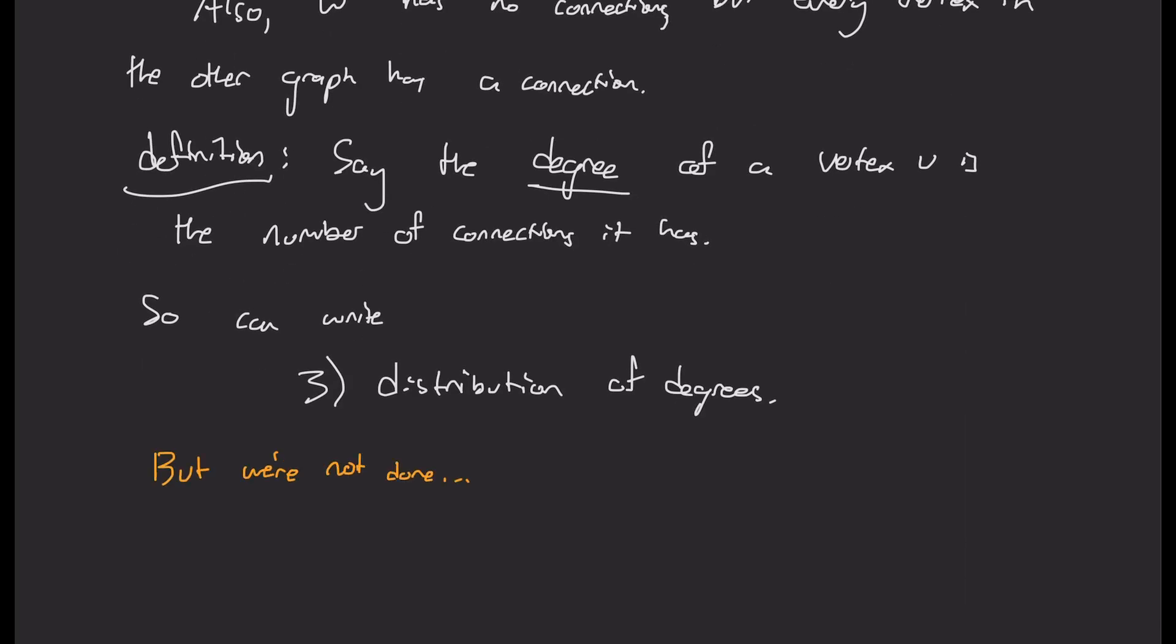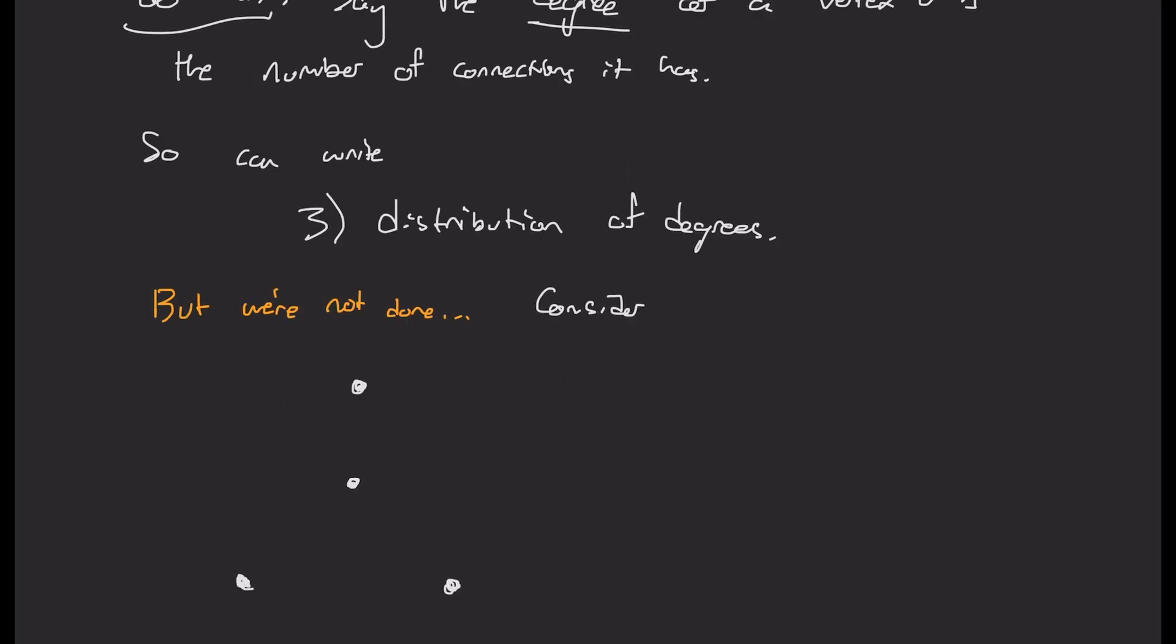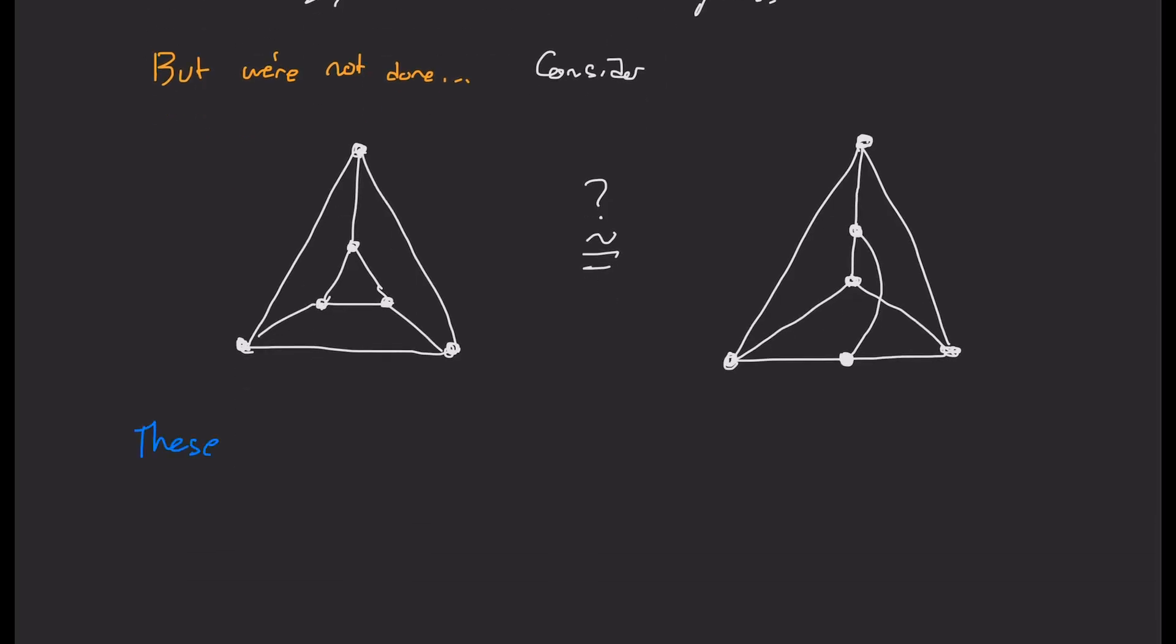Okay, but we're not done yet. So let's consider two other graphs. Let's draw two triangular shaped graphs and ask if they're isomorphic. So notice that these two graphs have the same number of vertices, edges, and degrees. But that still doesn't give us a labeling that doesn't show us that they're isomorphic.